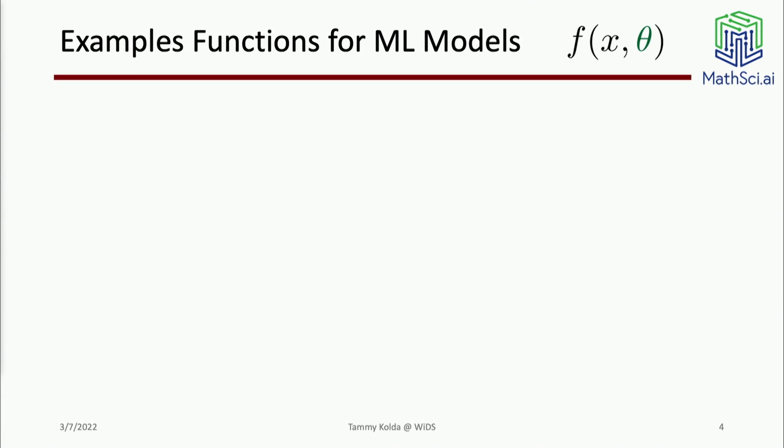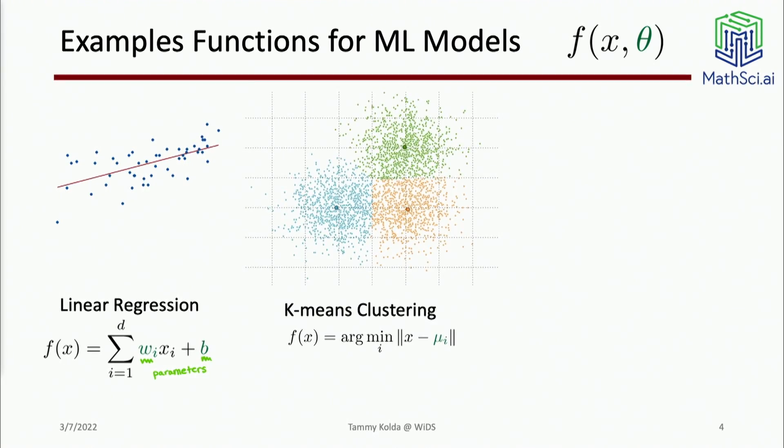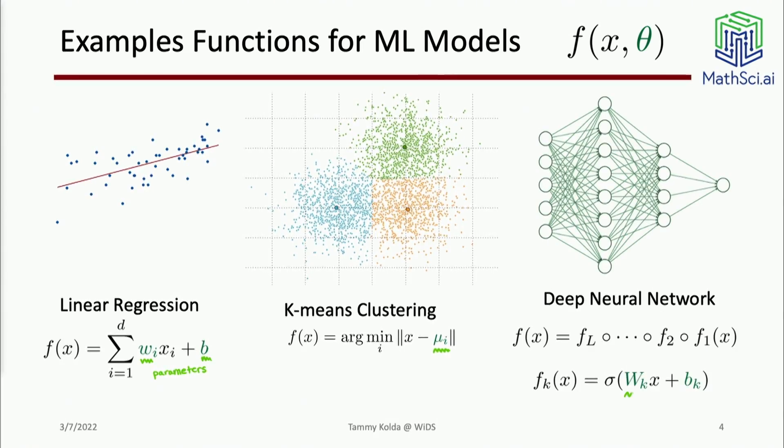Theta is a generic term. Theta is something different for every model. We think of just the simplest thing of linear regression - our function is just some weights multiplied times our input features plus some bias term. Those are the parameters, the theta for linear regression. You can think about clustering - the k-means algorithm is one of the major algorithms. You're finding the centers of the clusters. If you put in a new point, it tells you which cluster center is closest.